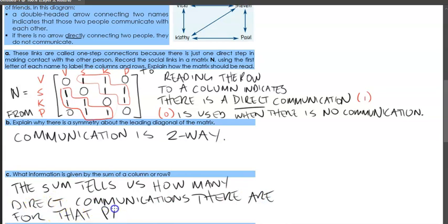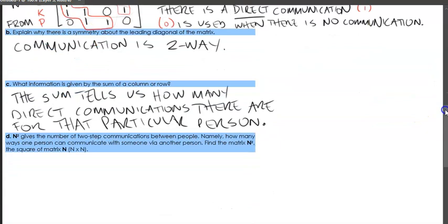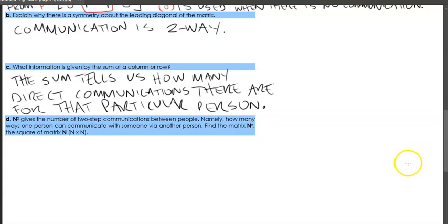Because the communication is two way, if we get the Kathy row, we should essentially get the same answer when we add them up three, because from Kathy, we can see one, two, three, but to Kathy, we can also see one, two, three as these arrows are two way. D says that N squared gives us the number of two step communications between people, namely how many ways one person can communicate with someone via another person. We're going to find the matrix N squared.